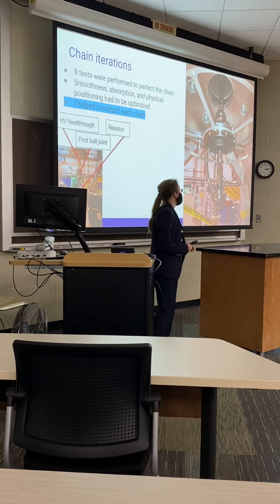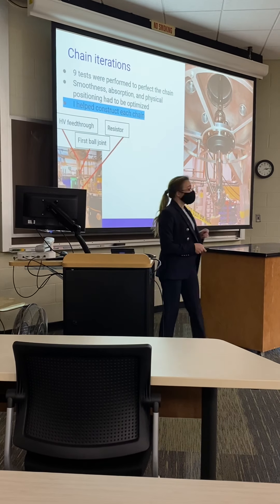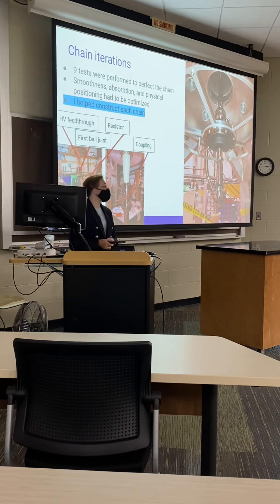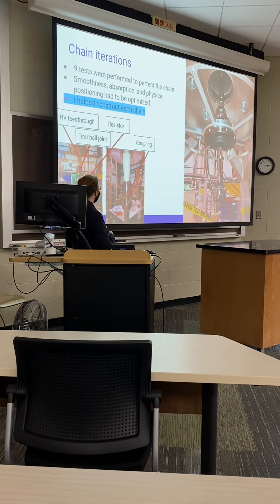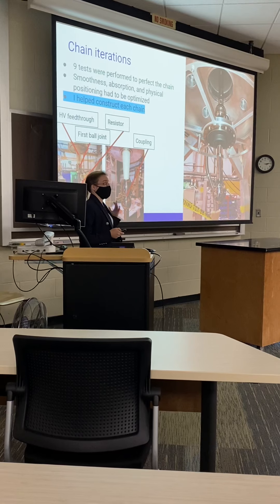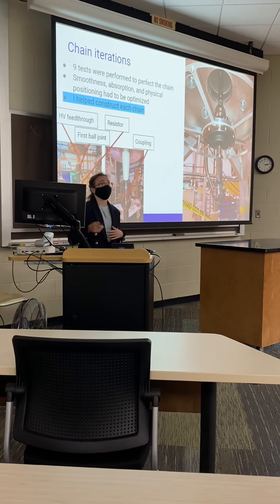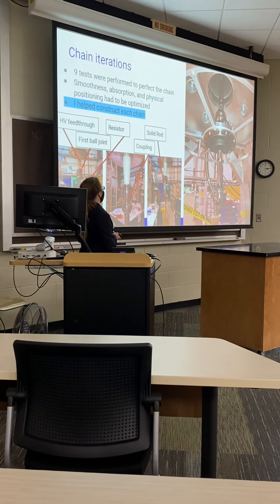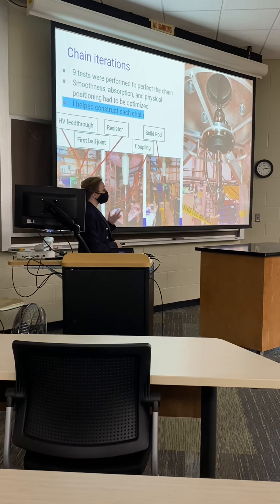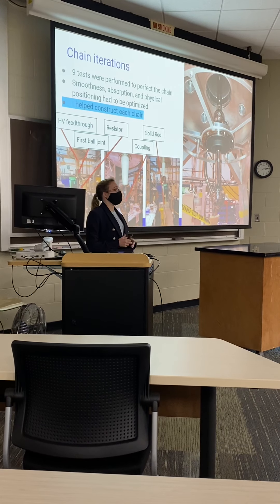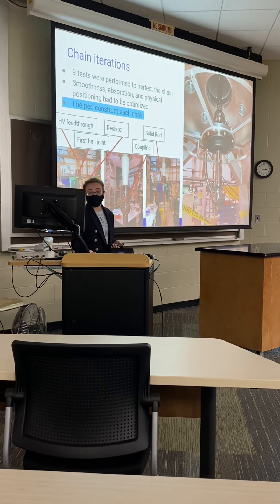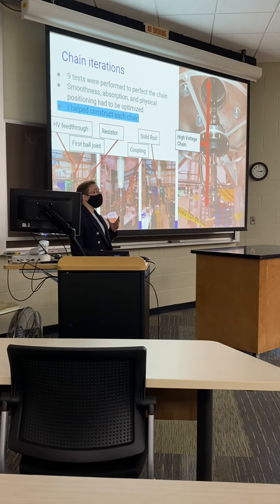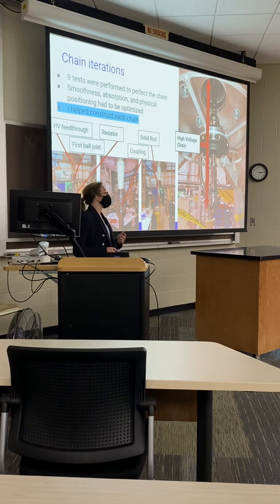We did a total of nine tests with different configurations, and tried to optimize the smoothness, absorption, and physical positioning of the chain. In the original design we had a resistor, but we couldn't get up to 200,000 volts with it, so we tried it without, using a coupling that just attached the two balls together. This was successful, indicating the resistor was the original problem. However, we couldn't stay with the coupling because the physical positioning wouldn't fit into the half-scale, so we ended up using a solid rod — but that also couldn't reach 200,000 volts, so we finally used a rod with a larger diameter that was hollow. I helped construct each different chain and run the tests themselves.